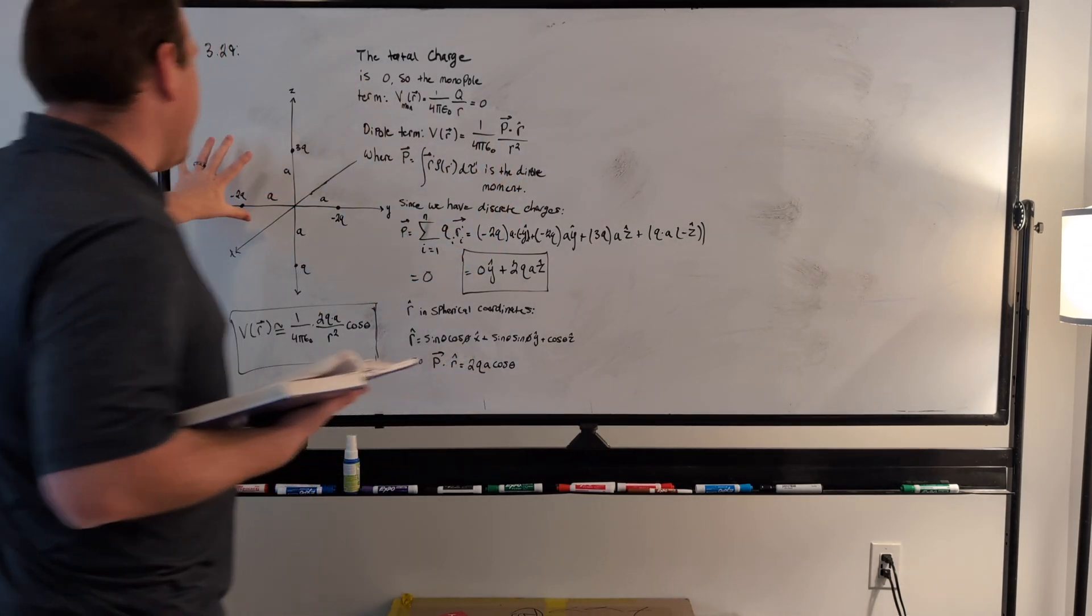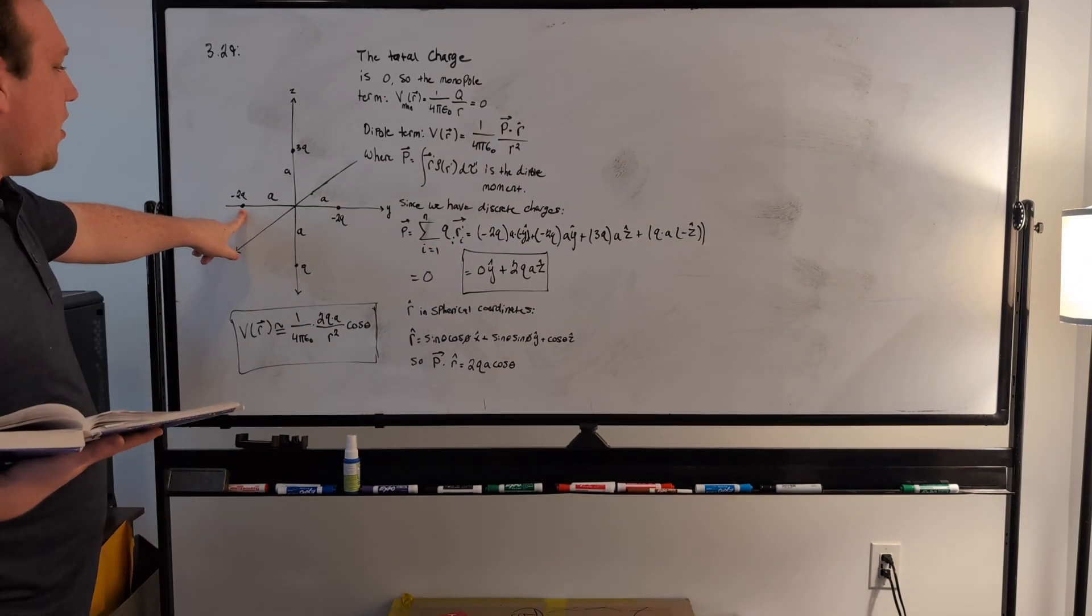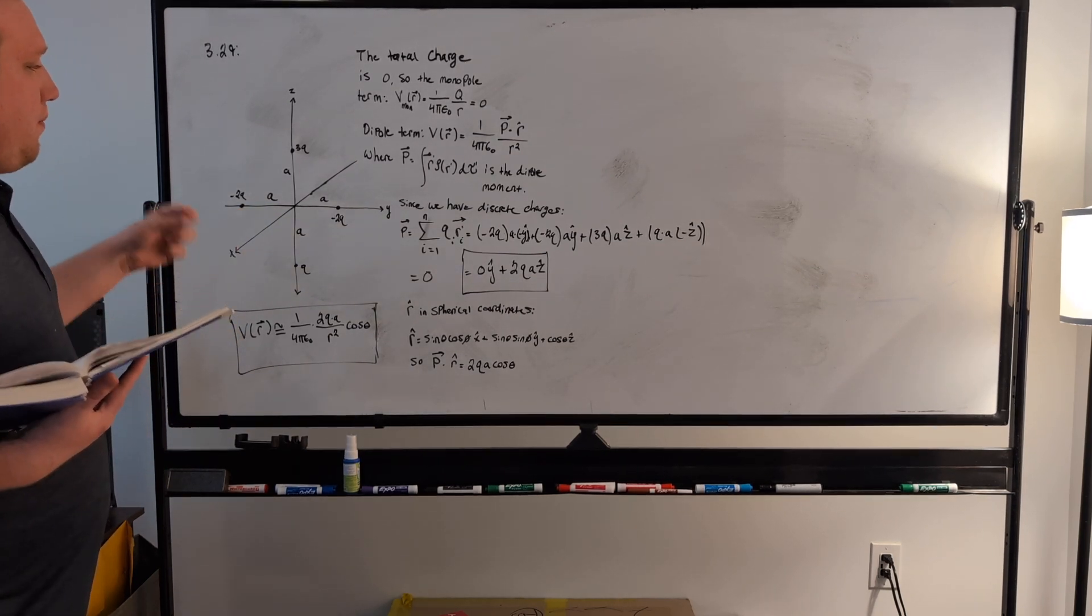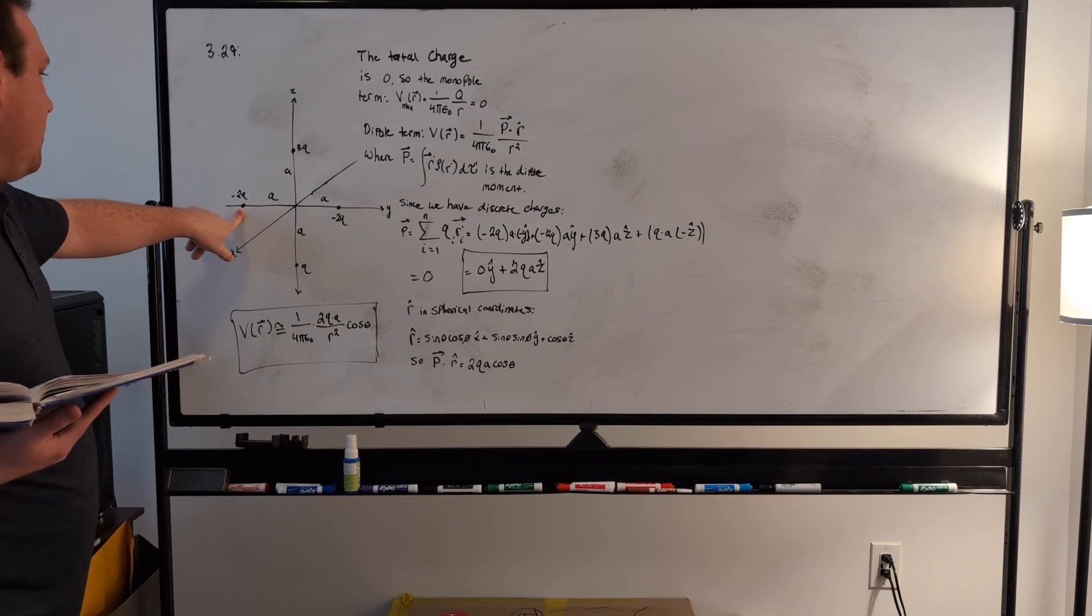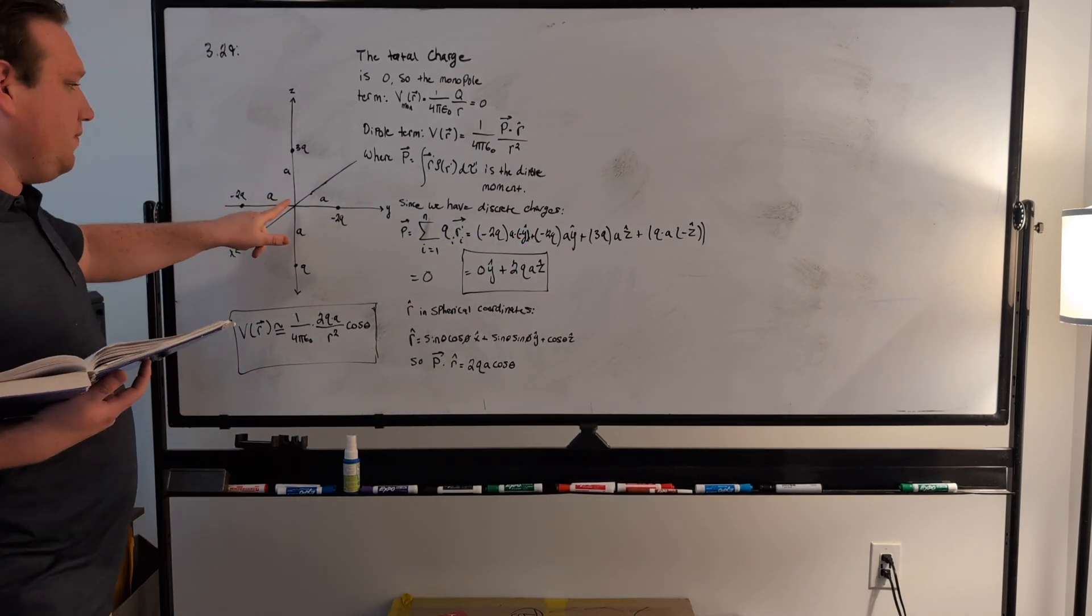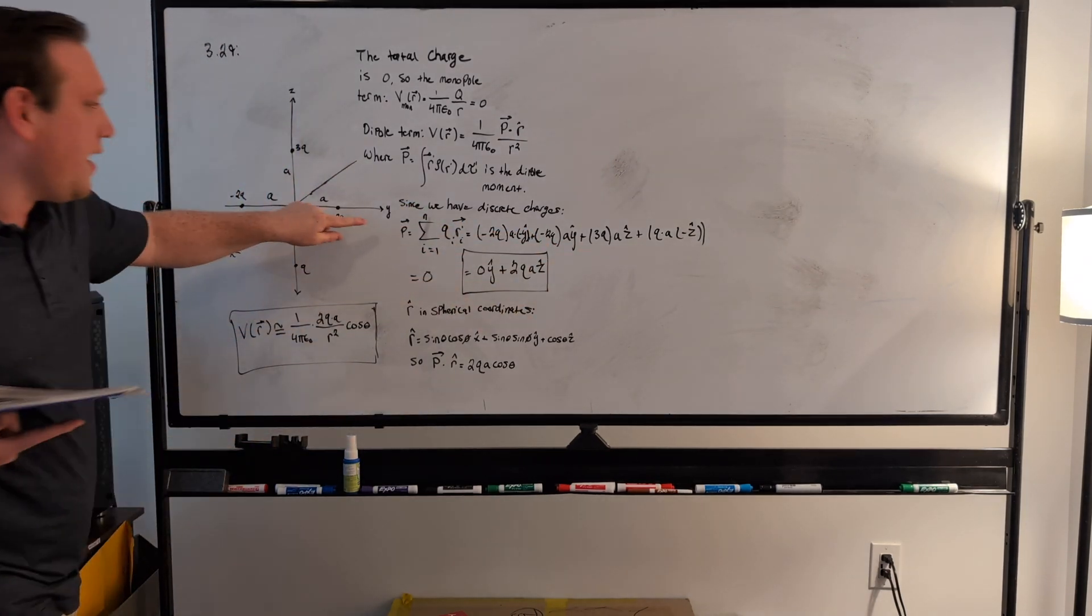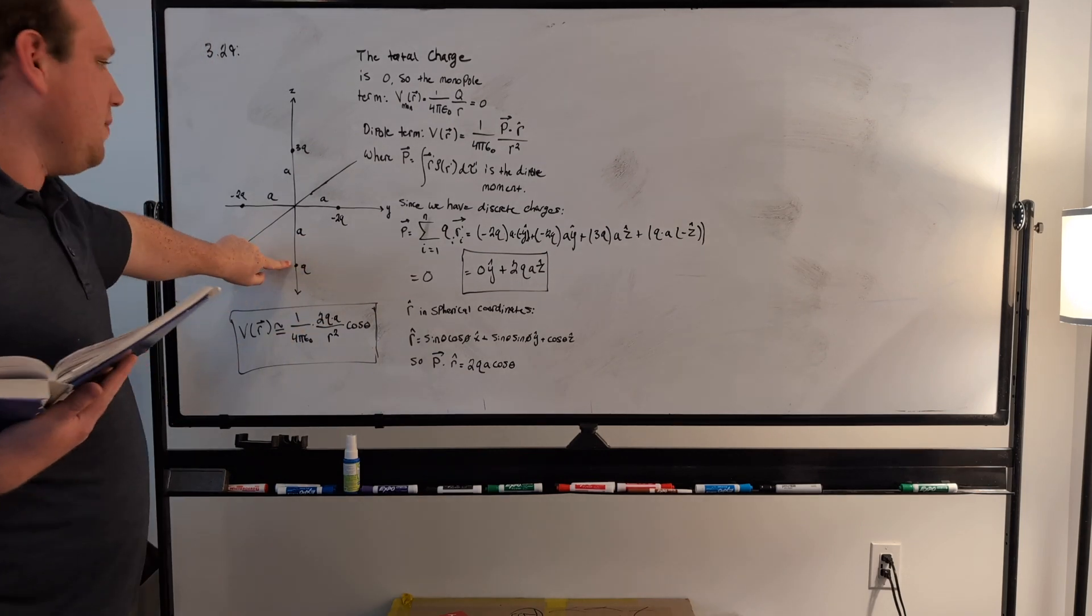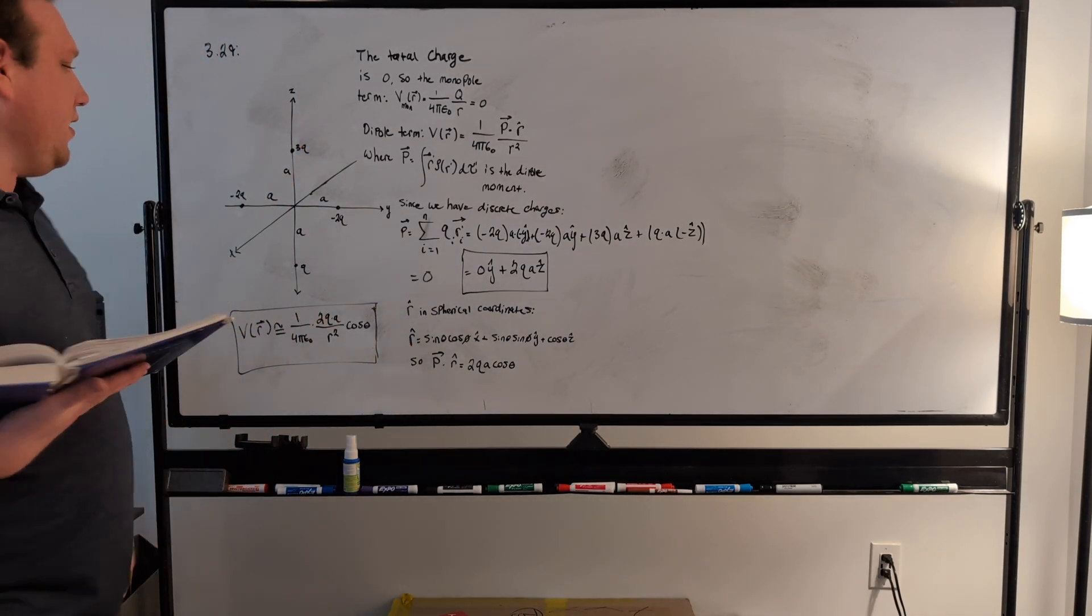So if we just take our problem here and do our summation, let's just see what we get. Let's start over here, our first term is minus 2q, that's our charge, and then the vector r-prime pointing to that charge is going to be a, which is the magnitude of the vector times in the minus y-hat direction, so I have a minus y-hat. Then we have the other one over here, minus 2q, so we have plus minus 2q times a in the positive y-hat direction, then we have this charge, which is just 3q times a in the z-hat direction, plus q times a in the minus z-hat direction. So that's basically our sum here.